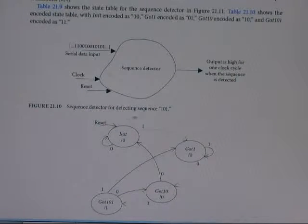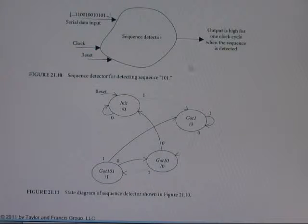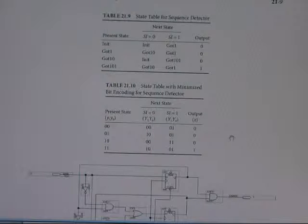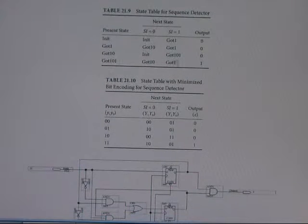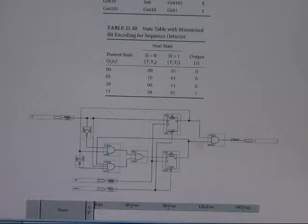This is a sequence of data based on the diagram. This is a state diagram — a sequence of data based on the state diagram. This is a circuit diagram of the input state sequence, and this is a profile sequence diagram. DT is a connection diagram.